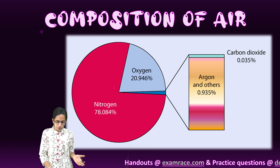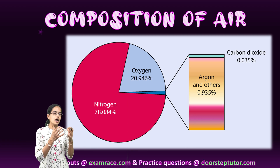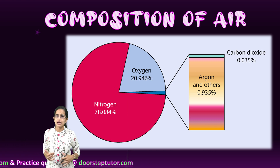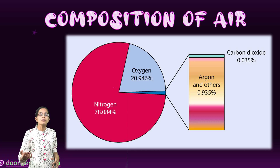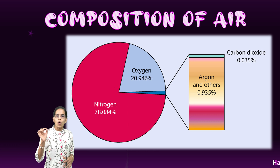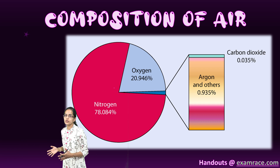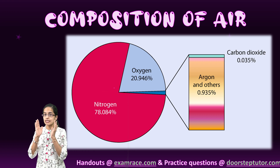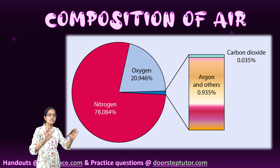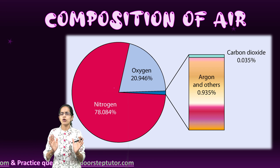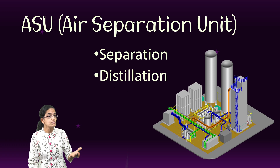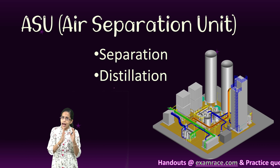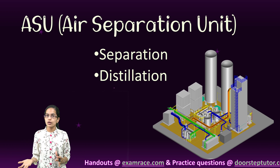Coming to a broad outline about how the separation of oxygen actually occurs: the air around us that we breathe is nearly 78% nitrogen, nearly 21% oxygen, and the remaining 1% constitutes argon, carbon dioxide, water vapour, and trace gases. This 21% present in the atmosphere is sufficient for us to breathe, but when it comes to medical illnesses, we require pure oxygen.